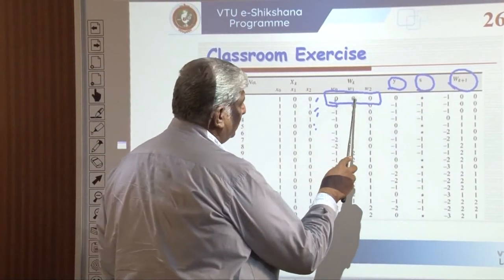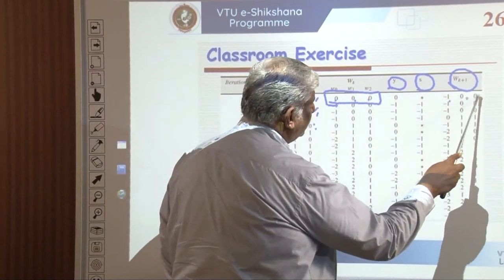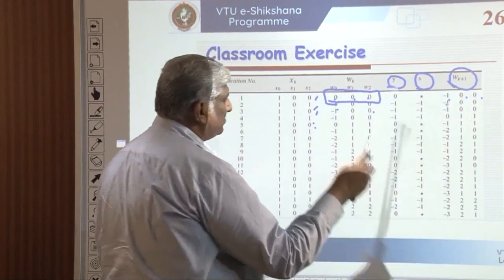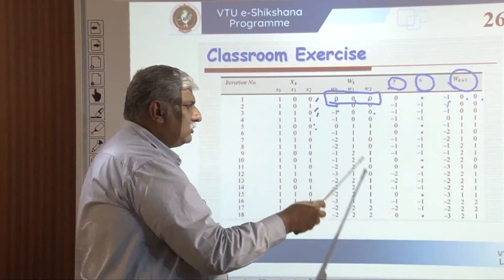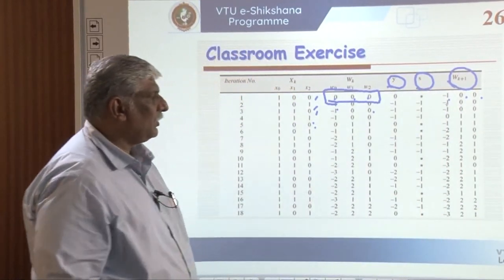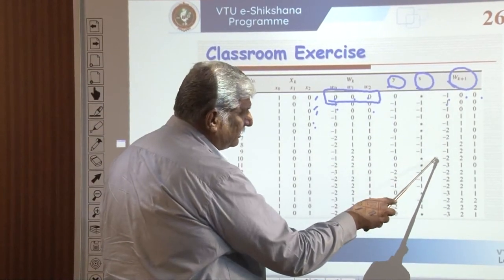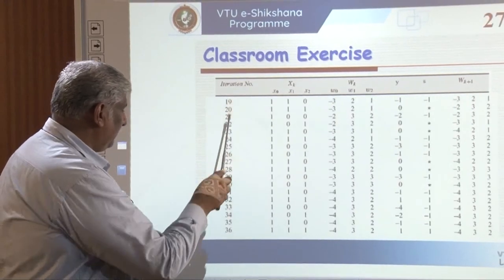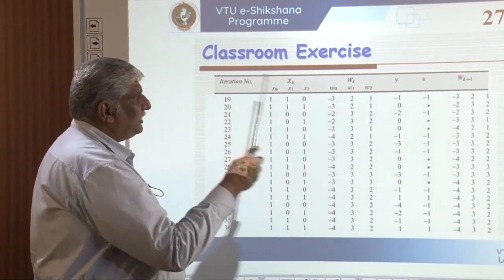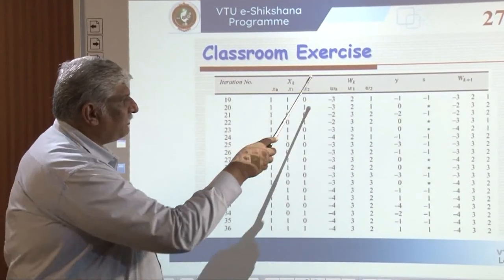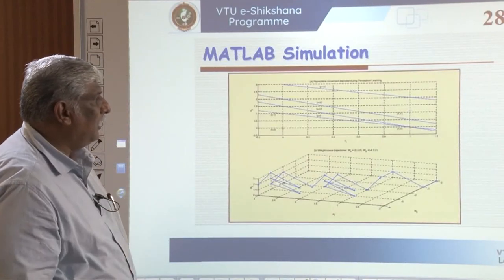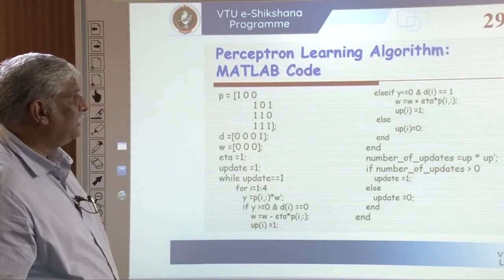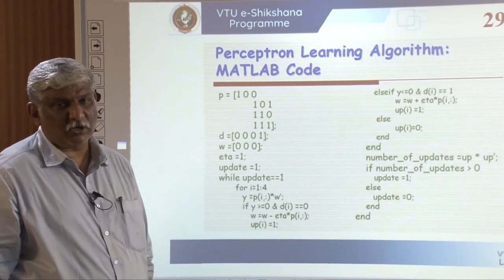The graph shows how the values change across different iteration levels — from 1 to 18 in the first pass, then continuing 19 to 36. Each iteration updates W_K to W_{K+1}. This is the simple MATLAB coding useful for writing this program. There are four sets of inputs: X0 (bias, always 1), and the other inputs (0,0), (0,1), (1,0), (1,1). D is the desired output vector initialized as (0, 0, 0, 1), and weights are initialized at (0, 0, 0) with eta set to its maximum value.